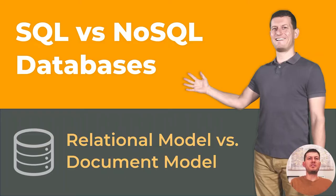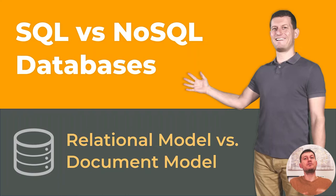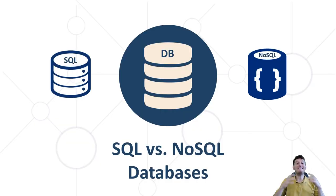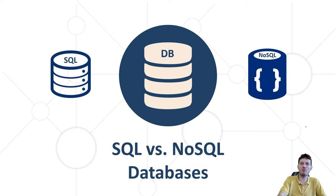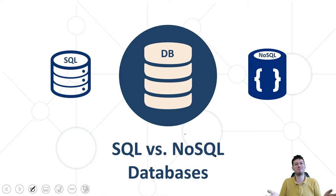There are two types of databases: relational and non-relational. The relational database model is based on tables and relationships between tables. The document model is based on collections of documents — for example, JSON structures. Let's now look at the two most popular types in modern software engineering: relational (also known as SQL databases) and non-relational (NoSQL databases).